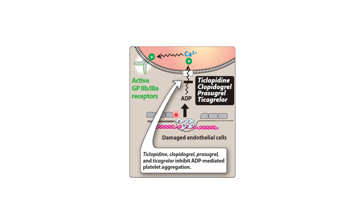The next drugs include ticlopidine, clopidogrel, prasugrel, and ticagrelor. These are P2Y12 receptor inhibitors that block the action of ADP on the P2Y12 receptor located on platelets. ADP is a platelet-activating factor, and blocking this receptor decreases the activation of platelets.